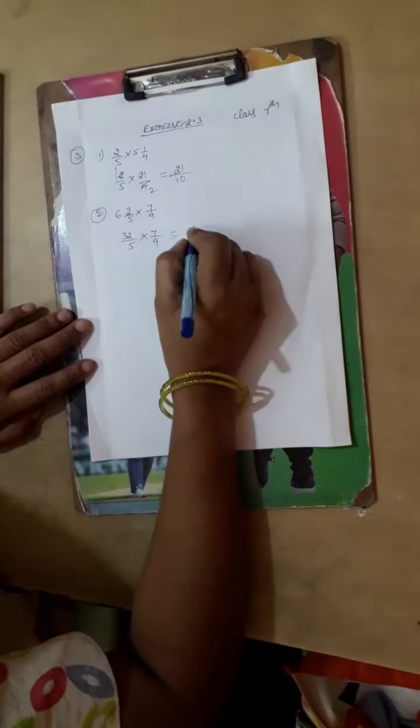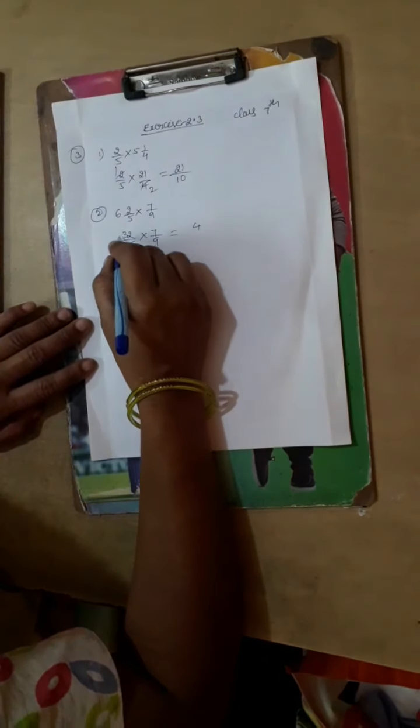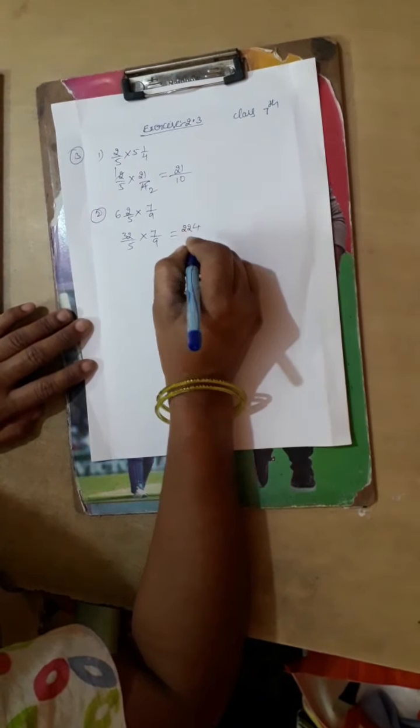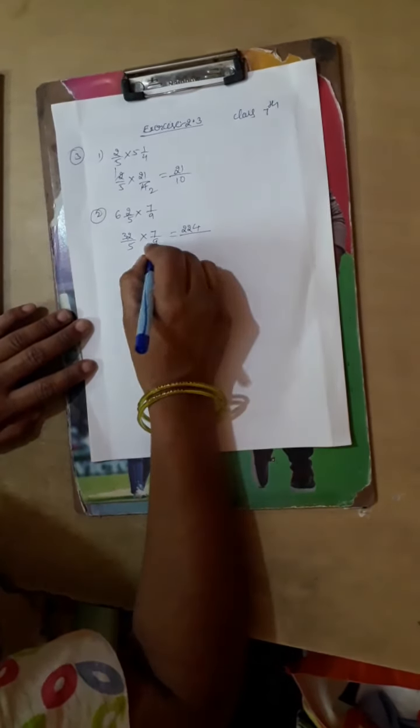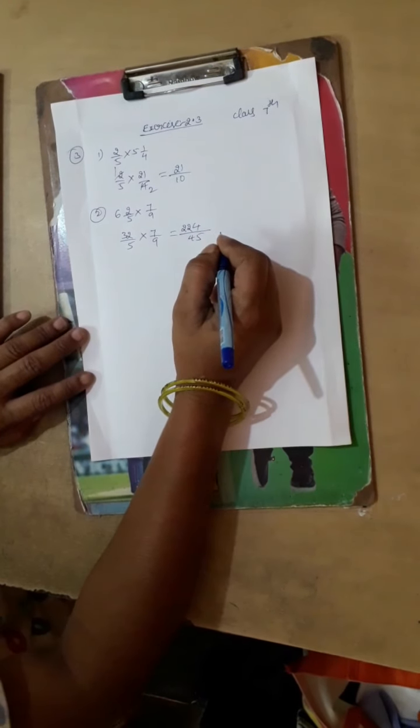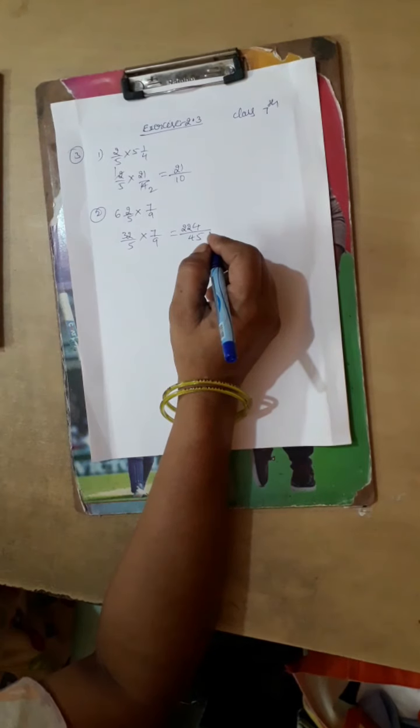Listen: 7 times 2 is 14, 1 carry. 7 times 3 is 21, 21 plus 1 is 22, divided by 9 times 5 is 45. Understand? Just we have to multiply the following fractions.